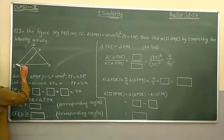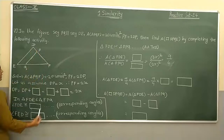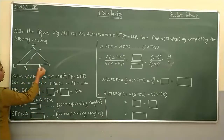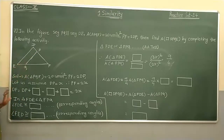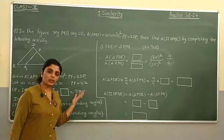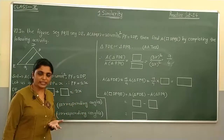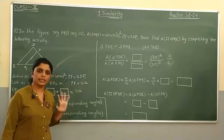To find the area of this quadrilateral, the simplest approach is: take the bigger triangle FDE and subtract the smaller triangle FPQ from it. But first, we must prove that these two triangles are similar, because until they are proven similar, we cannot find their area ratios or use any related theorem.